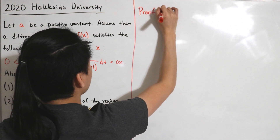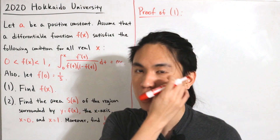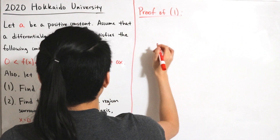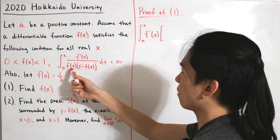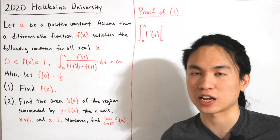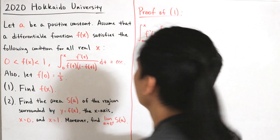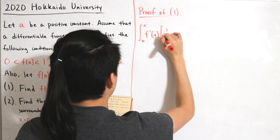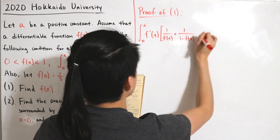Let's call this Part 1. We're going to find what f(x) equals. Starting with the integral, it's worth noting that f'(t) is in the numerator, so we can factor it out. For f(t)(1 - f(t)) in the denominator, we can apply partial fraction decomposition to make integration easier. After applying that, we get 1/f(t) plus 1/(1 - f(t)), all multiplied by f'(t) dt.